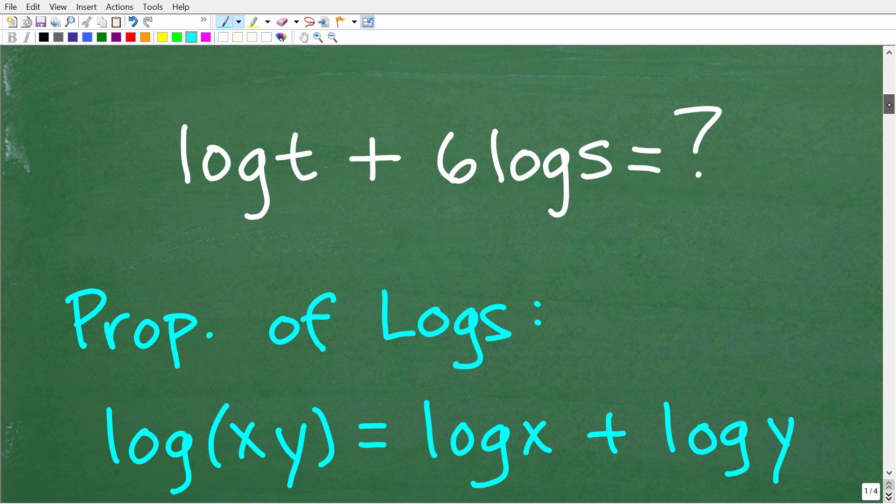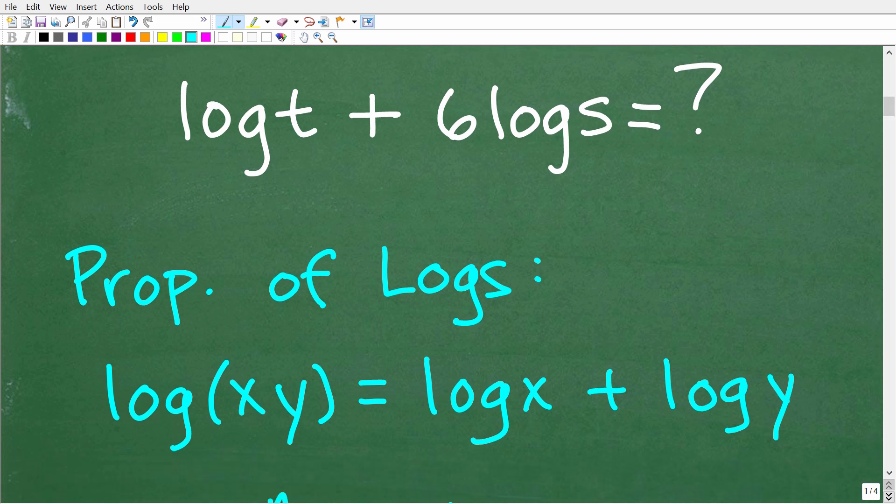So let's get into the solution right now. So again, we're going to condense this expression. We have log t plus 6 log s. All right, so you need to understand the properties of logarithms to solve this problem. Now, I'm not going to cover all the properties. I'm just going to be talking about the properties of logarithms that we need for this particular problem. But here is one main property you definitely need to understand. And that is the product property.